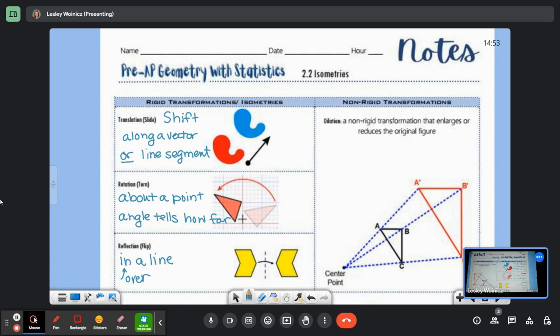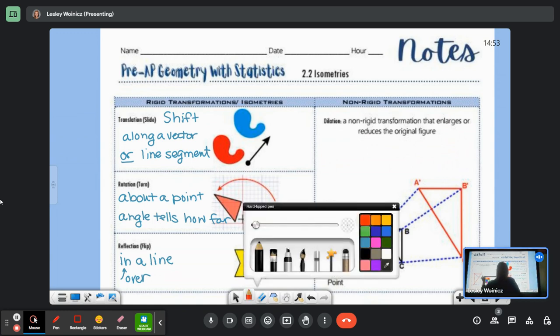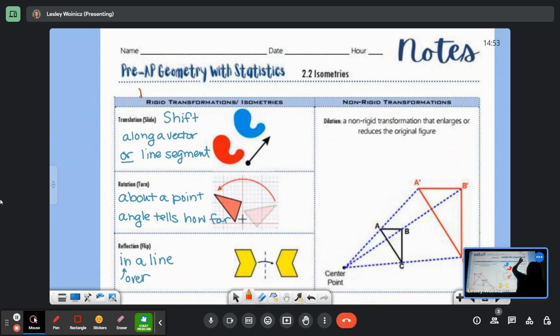All of those types of transformations are going to preserve the size and the shape of our figures. So they all are going to produce congruent figures. The symbol for congruent is the equal sign with the tilde over it.